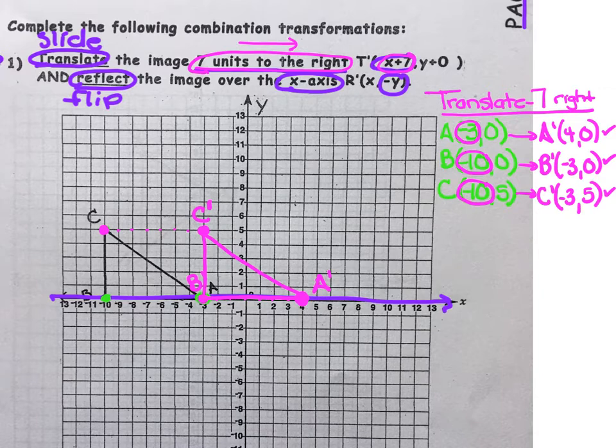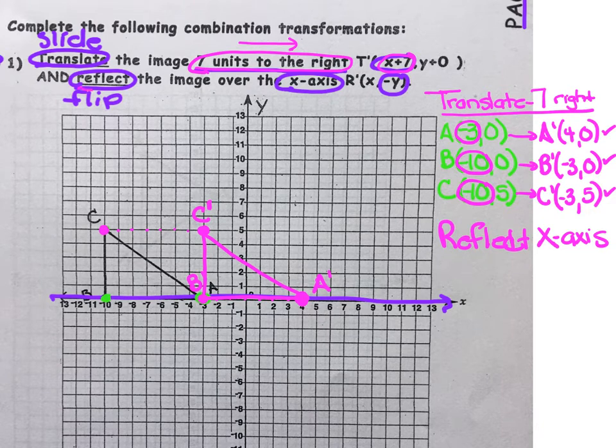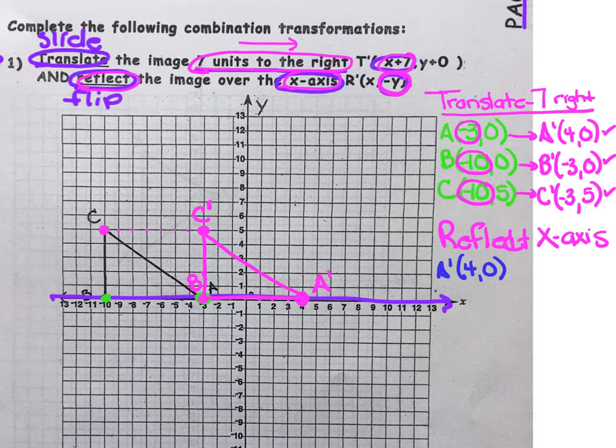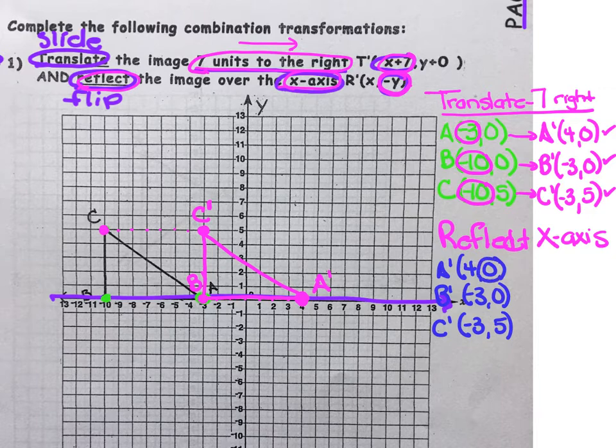Our next step is to reflect or flip over the X axis. Remember, when we reflect over the X axis, our Y coordinates will change to the opposite. So let's list all of our coordinates. A prime is 4, 0. B prime is negative 3, 0. And C prime, negative 3, 5. Circle all the Y coordinates. Those Y coordinates will flip to their opposite.